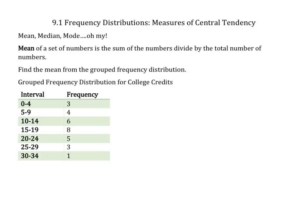Mean of a set of numbers is the sum of all the numbers divided by the total number of numbers that we have. So let's find the mean from the grouped frequency distribution below.